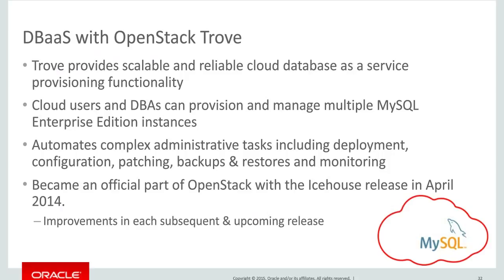With OpenStack Trove, you're allowing other development groups or individuals within your organization to provision various database engines. You're providing them with the machine images to use, you can manage the configuration, and you can automate a lot of the complex tasks — ensuring that backups are done a certain way at a certain time, managing patching and upgrades, and providing a uniform way to monitor all the instances.